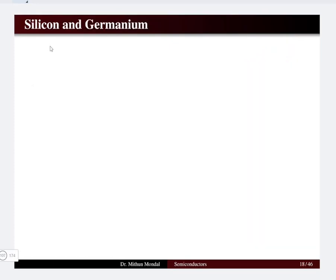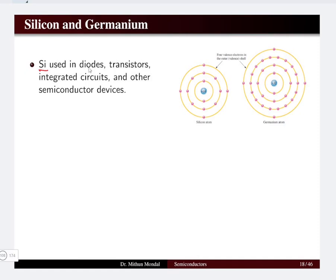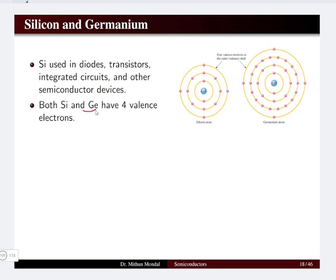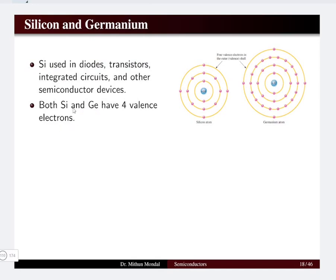The two famous semiconductor materials are silicon and germanium. Silicon is widely used in diodes, transistors, integrated circuits and other semiconductor devices, making it more prominent than germanium. Comparing silicon and germanium, both have four valence electrons in their outermost shell — that is the property of these semiconductors. The valence electron of germanium is located in the fourth shell, while silicon's is in the third shell.